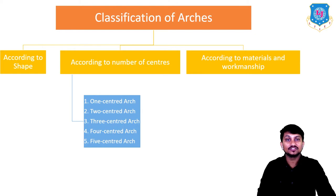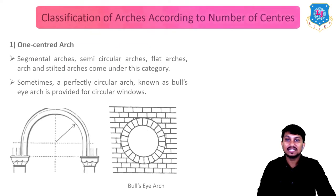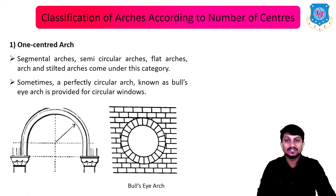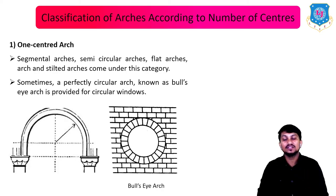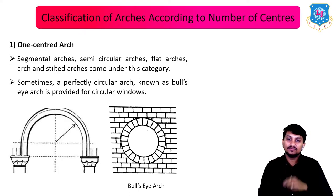Now let's see the classification of arches according to number of centers: one center, two center, three center, four center, and five center. In the one-centered arch, segmental arches, semicircular arches, flat arches, and stilted arches fall under this category. Sometimes a perfectly circular arch known as a bull's eye arch is provided for circular windows — in this category only one center is used.